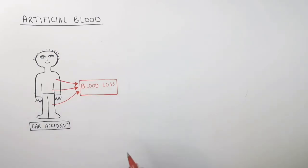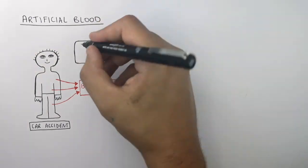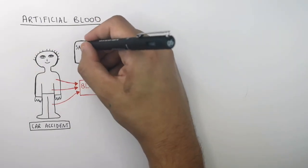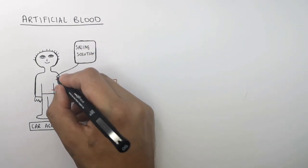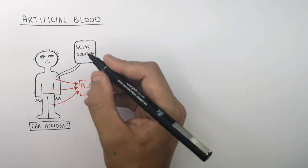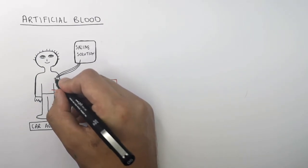This person has lost blood. So if someone has lost blood, a paramedic would use a saline solution which is effectively salty water. And this saline solution is then connected to the blood supply of the patient, and then they're going to have their blood replaced with this artificial blood.